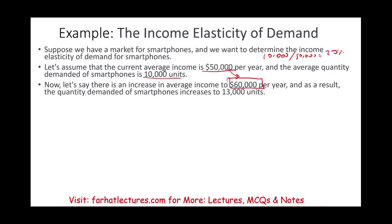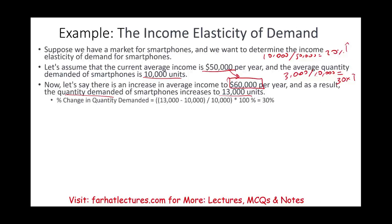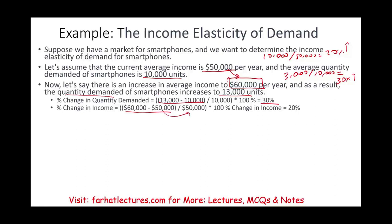The increase from $50,000 to $60,000 is a 20% increase. However, the quantity demanded for smartphones increased to 13,000 — a difference of 3,000 divided by the initial 10,000 — so the quantity increased by 30%. We see that the increase in quantity demanded is faster than the increase in income. When we compute income elasticity — percentage change in quantity divided by percentage change in income — the answer is 1.5.